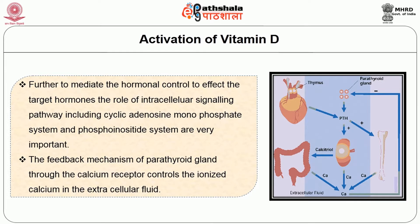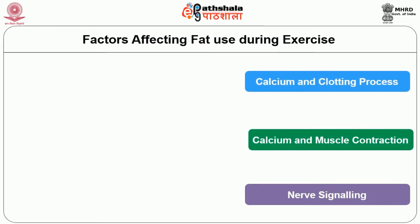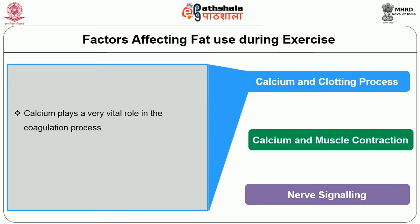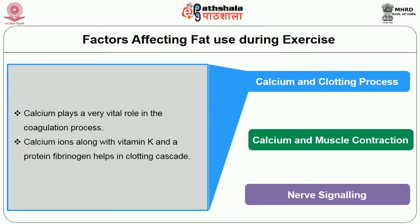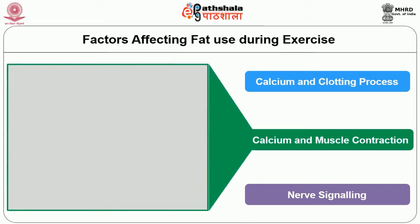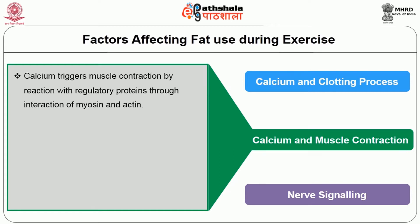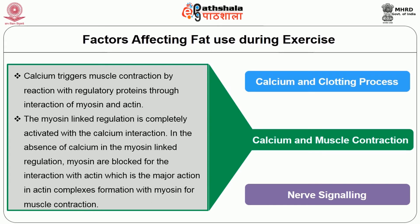Now we will see the various physiological functions of calcium. The first and most important function is the clotting process. Calcium plays a very important role in coagulation. Calcium ions along with vitamin K and the protein fibrinogen help in the clotting cascade. The next function is the role of calcium in muscle contraction. Calcium triggers muscle contraction by reacting with regulatory proteins through the interaction of myosin and actin. The myosin-linked regulation is completely active with calcium interaction.